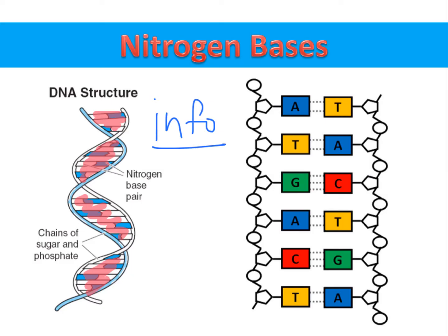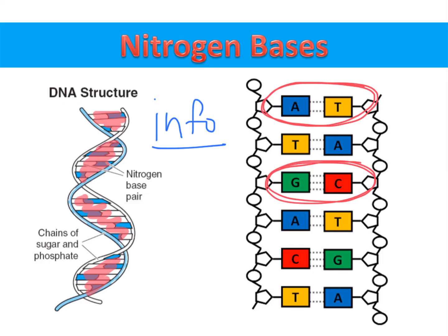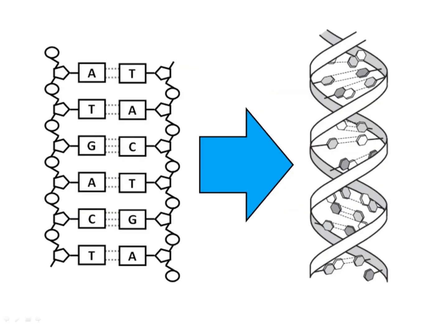The nitrogen bases found in the DNA molecule are adenine, thymine, guanine, and cytosine. Adenine always pairs with thymine, and guanine always pairs with cytosine. And although we often show the two strands of DNA sitting side by side, they actually twist around each other into the shape of a double helix.